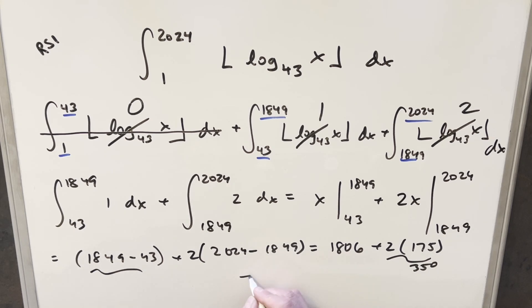So putting this all together for my final solution, we just get 1861. No, we don't. So putting it together, adding 1806 and 350, we get our final solution of just 2156.